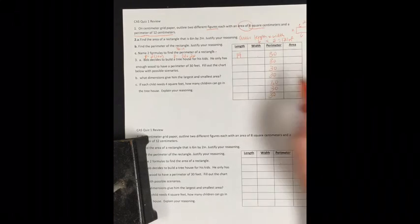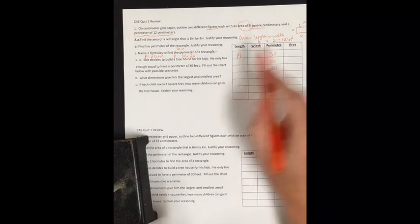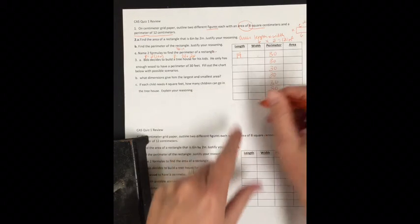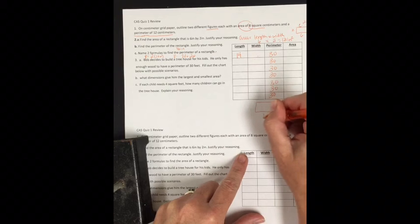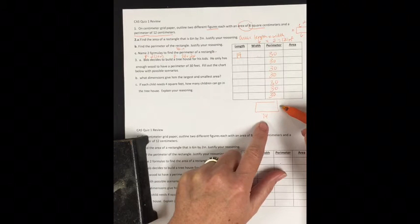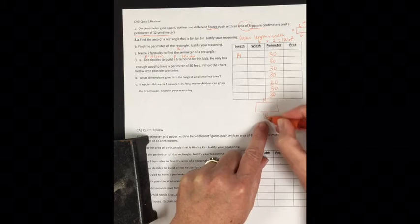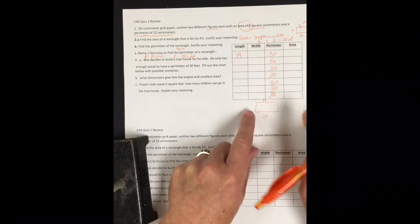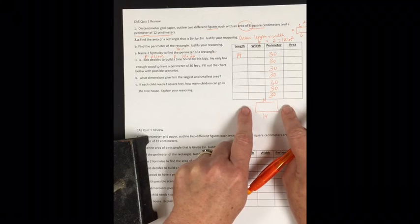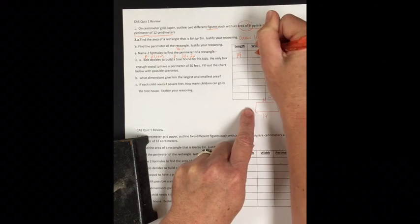My length is 14. Let's draw a picture. What would this have to be so everything adds up to 30? If this is 14, this is 14, so that's already 28. I only have 2 left for my side, so each side must be 1.